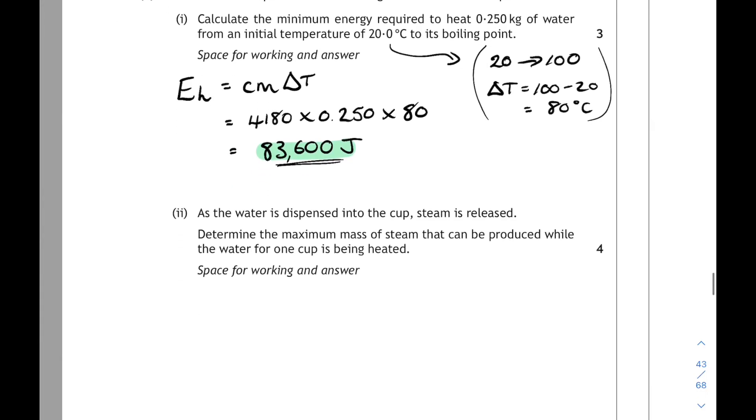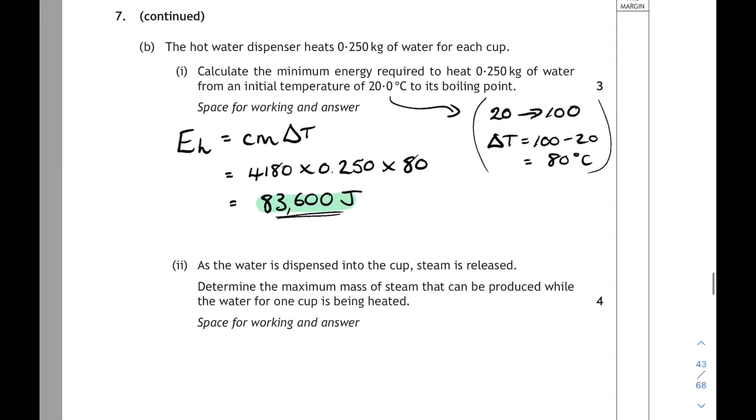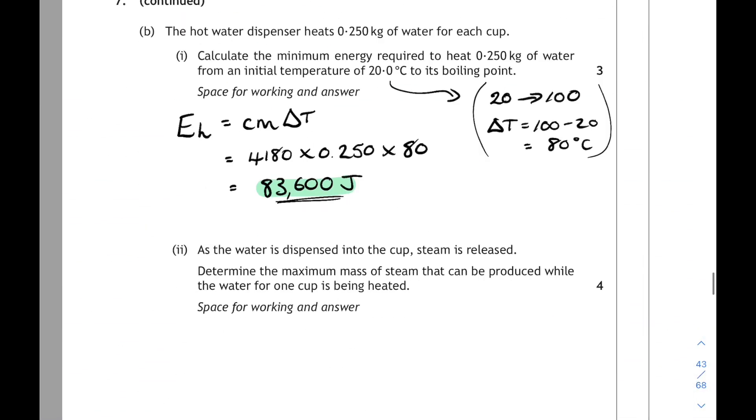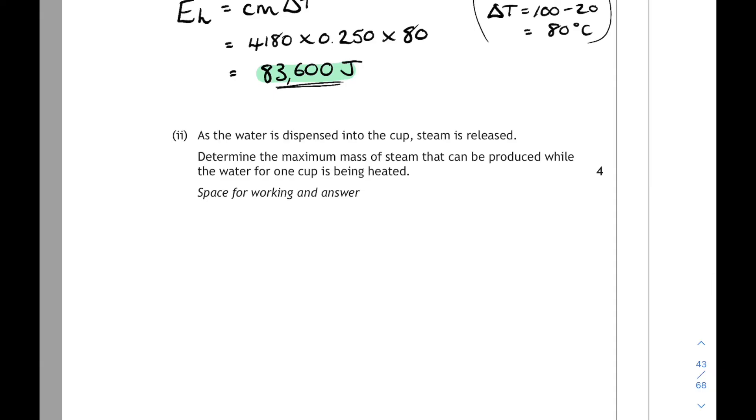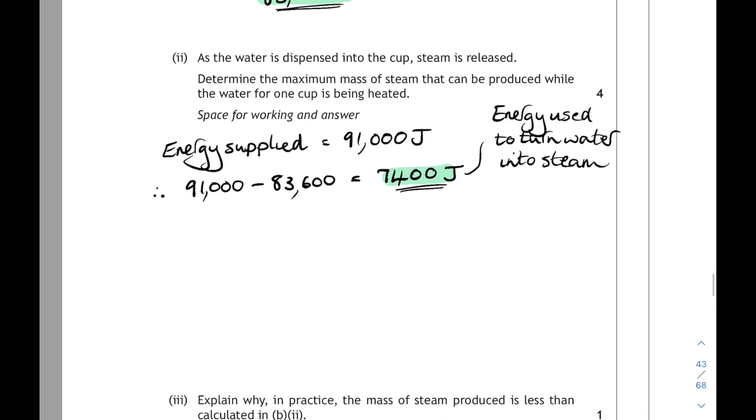Part 2. As the water is dispensed into the cup, steam is released. Determine the maximum mass of steam that can be produced while the water for one cup is being heated. So some of our energy is being used to change the water into steam. And it's the difference between the 91,000 and the 83,600. So that extra energy that we've got, if the energy supplied was 91,000 and we only needed 83,600 to get it to boiling point, then the remainder of the energy, which is 7,400 joules, is the energy that's required to change some of the mass of the water into steam. And we can use our specific latent heat relationship, E_h equals ML, to work out that mass.